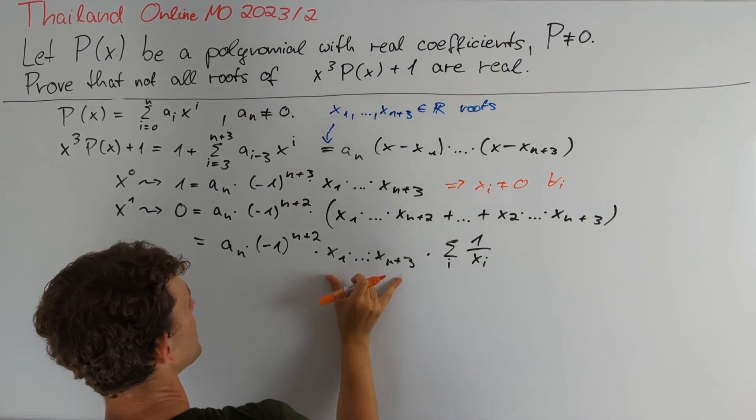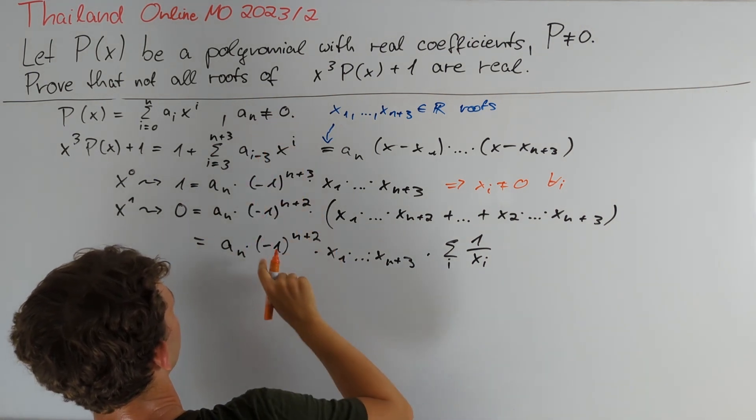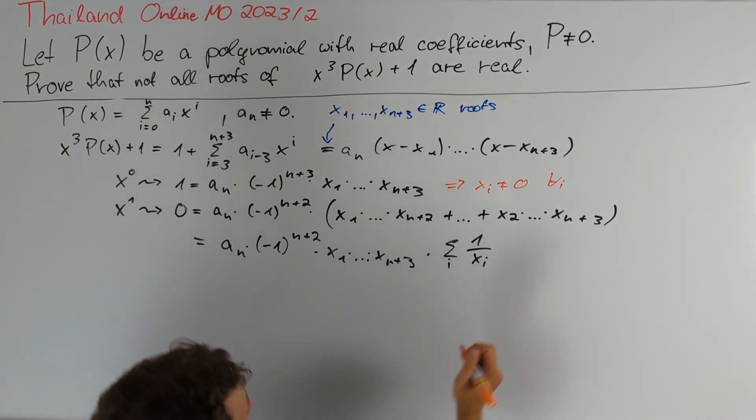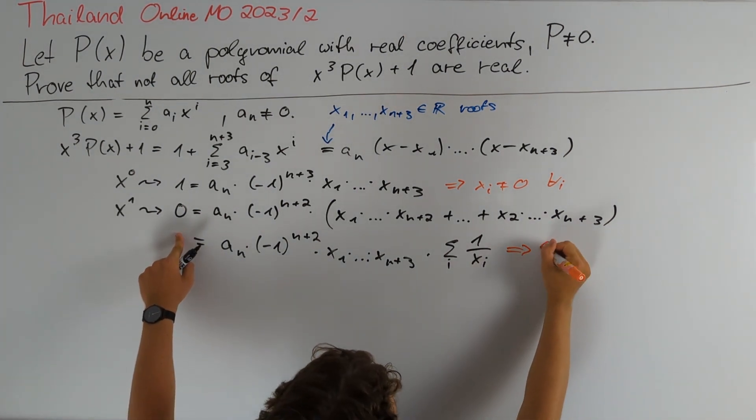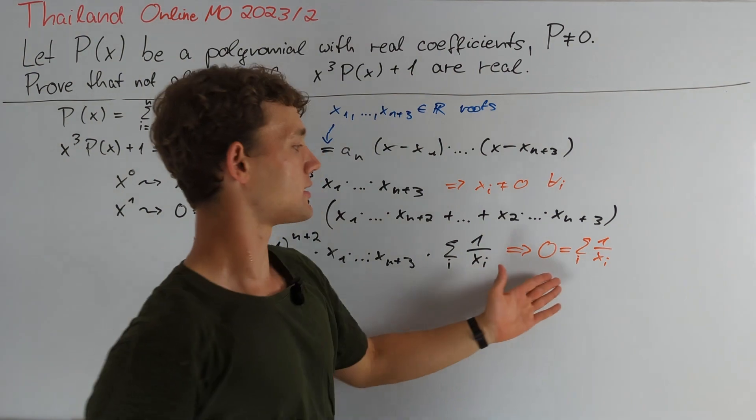Since all the xᵢ are not equal to 0 and because aₙ does not equal 0 and minus 1 to the power of n+2 is neither, we can conclude that 0 must be equal to the sum over all i of 1 divided by xᵢ. This is a really nice result.